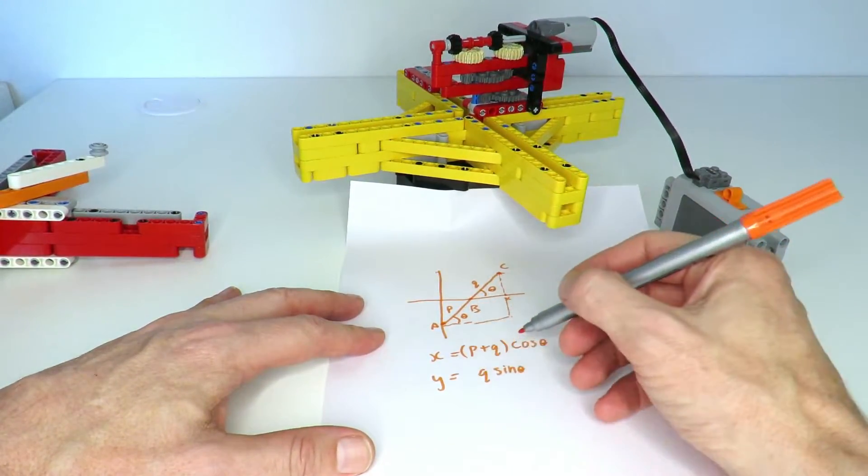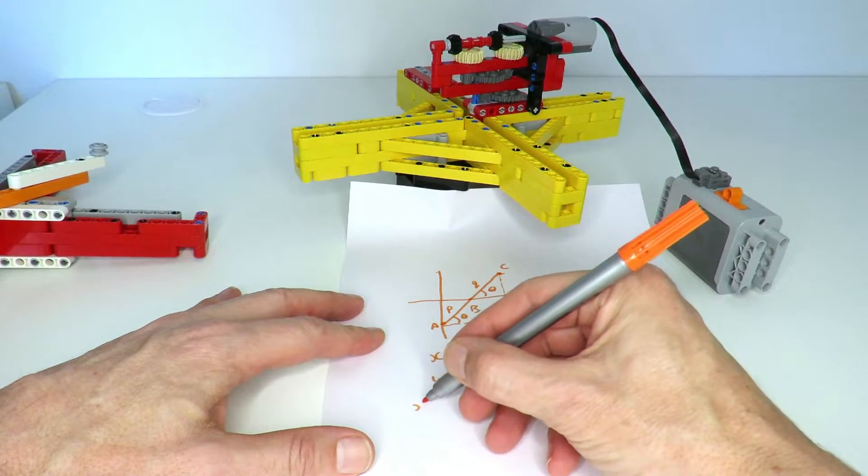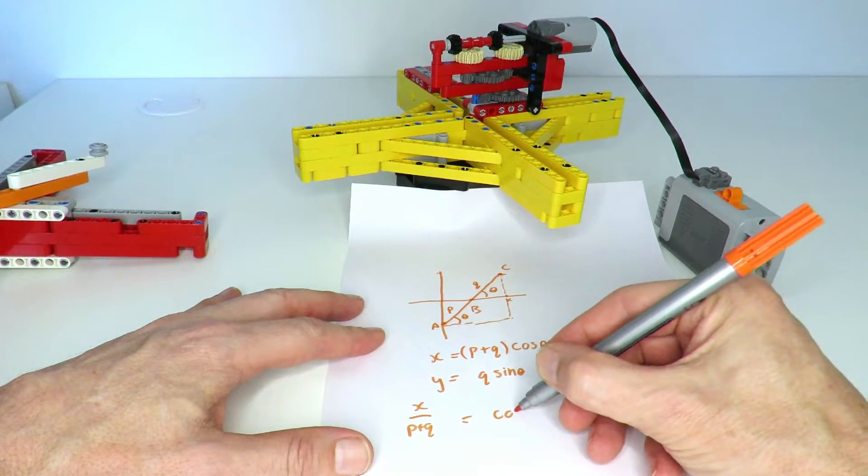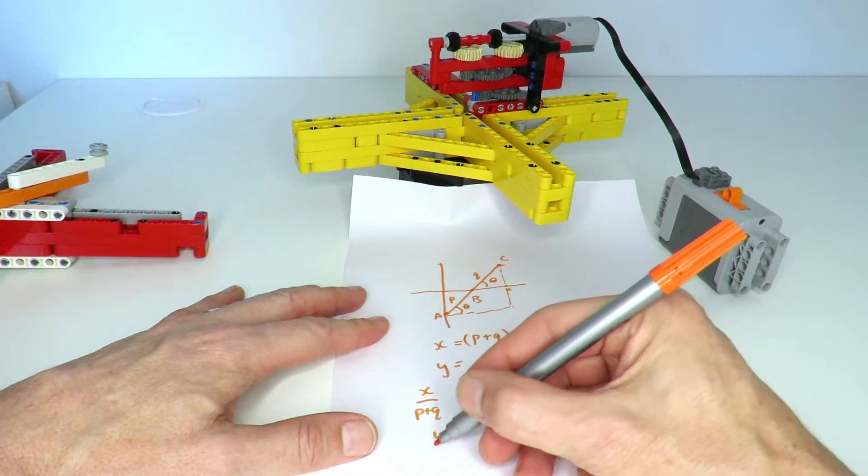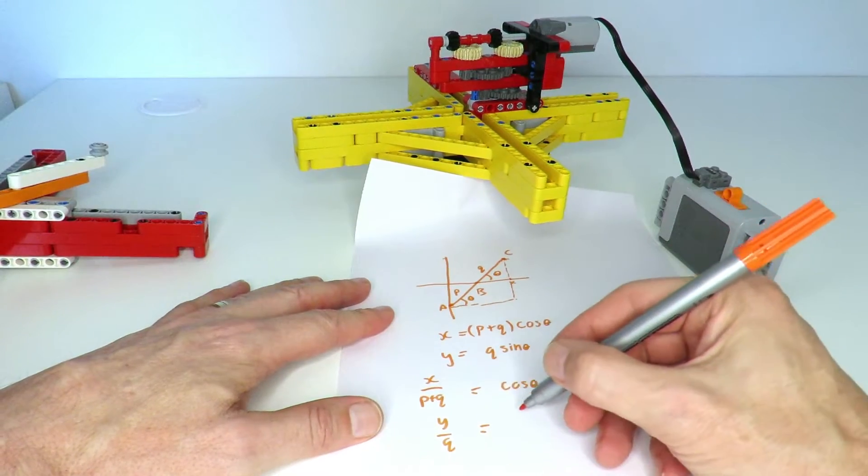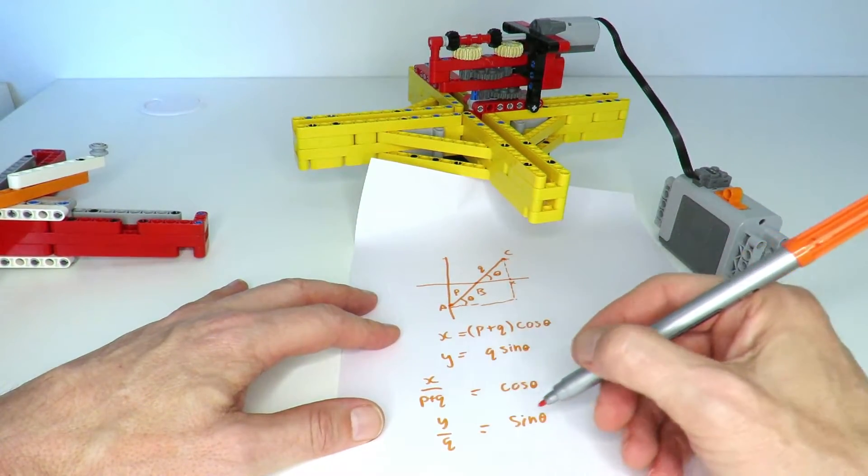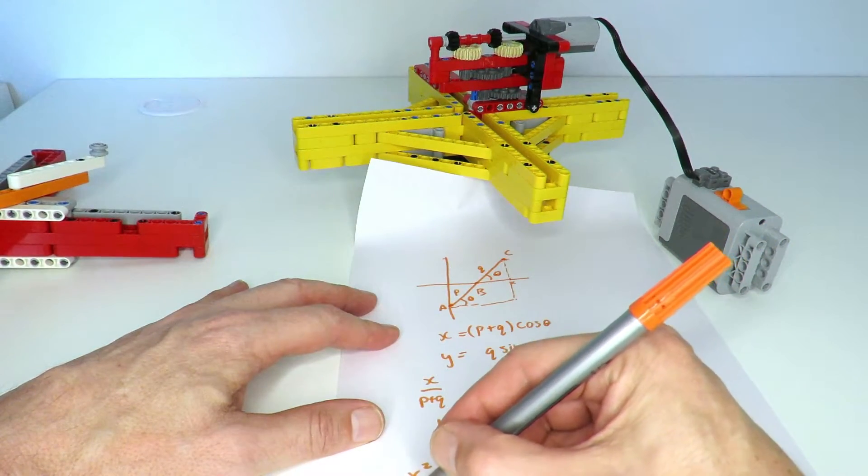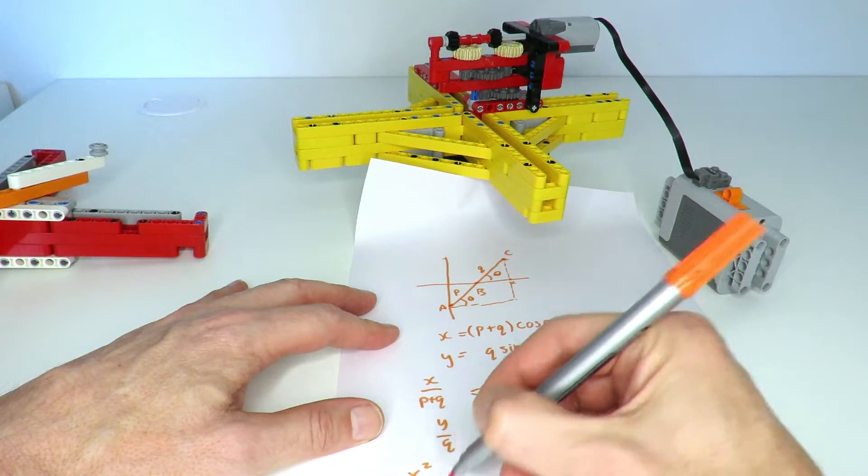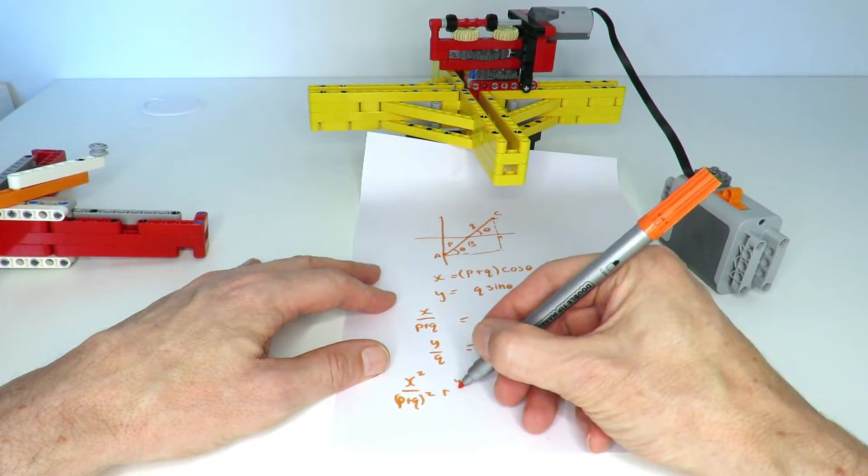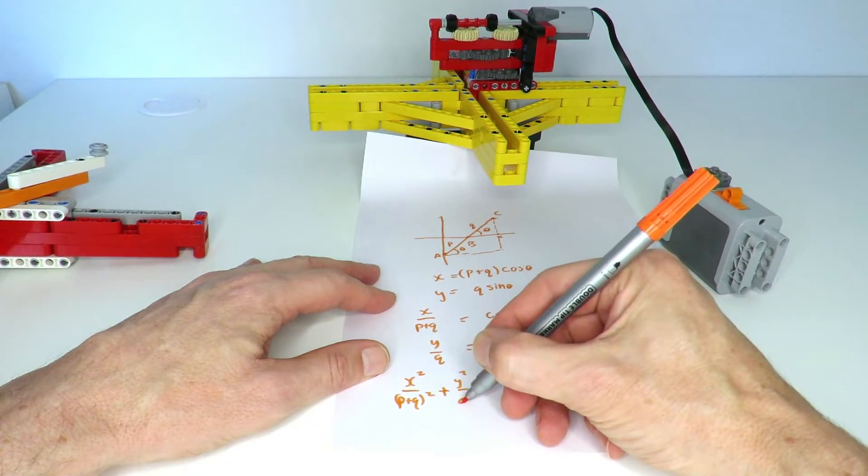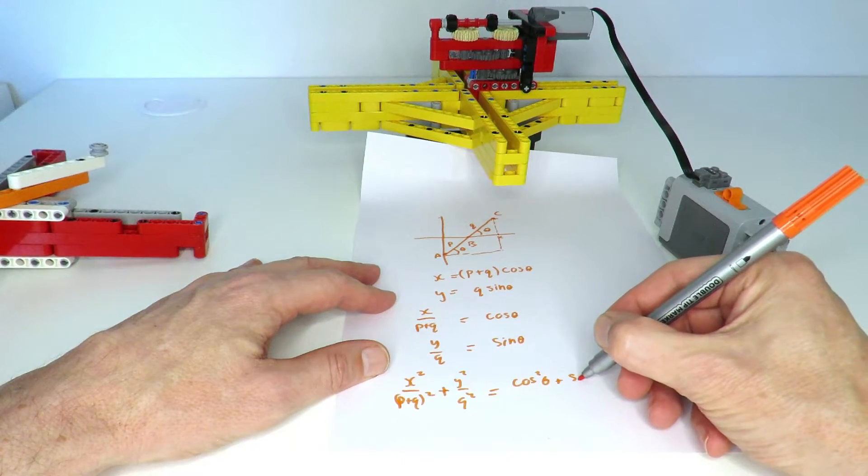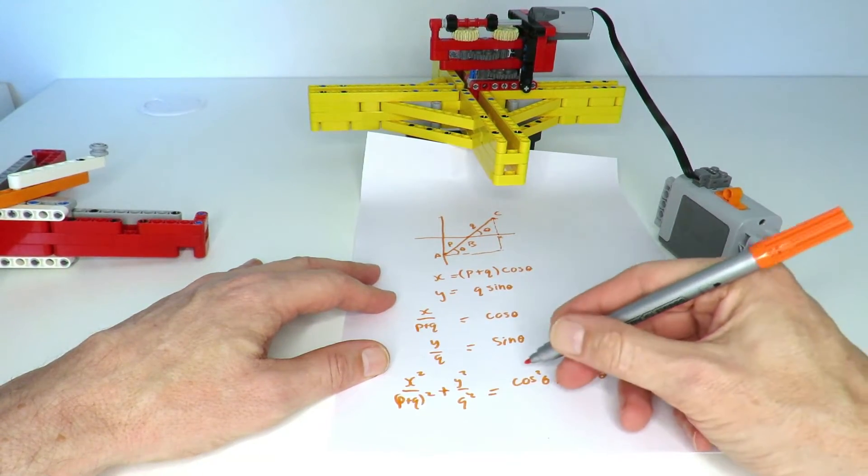If we then rearrange these equations, we can write that x divided by (p + q) is equal to cos theta, and we've got y over q is equal to sin theta. If we square both sides and add them, we know that x squared over (p + q) squared plus y squared over q squared equals cos squared theta plus sin squared theta, which of course is equal to one.